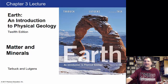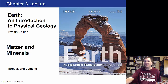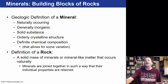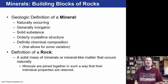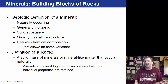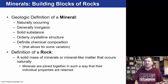Hello and welcome back to our geology lecture. This is chapter three on matter and minerals. A mineral is naturally occurring, generally inorganic — which means not from living animals or things like that — and is a solid substance with an orderly crystalline structure, meaning the atoms inside are arranged in a specific order.